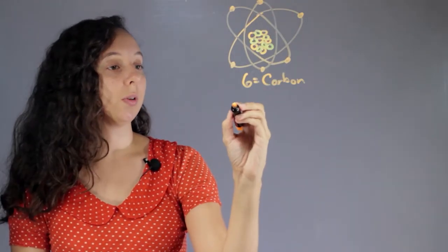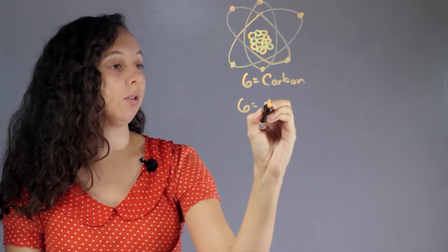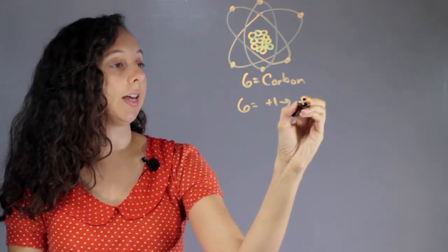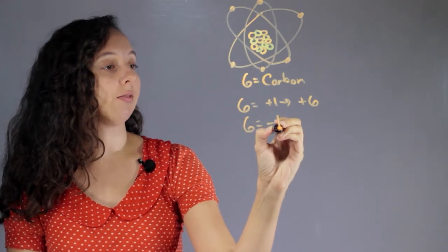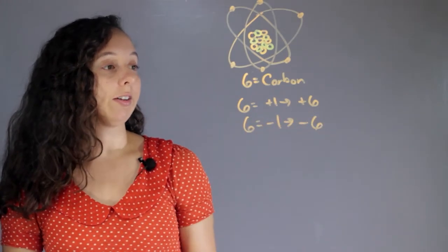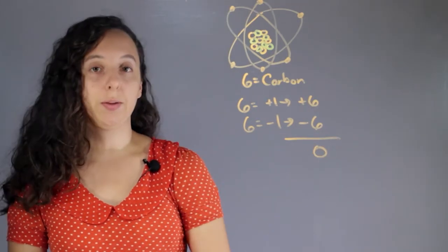So, six protons that each have a charge of plus one equals a total charge of plus six. It also has six electrons, which each have a charge of negative one, so a total charge of negative six. So, overall, the charge of this atom is zero.